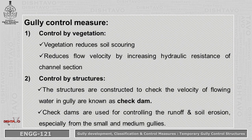Gully control measures. Control by vegetation: grasses or bushes can be grown to reduce soil scouring. It will reduce the flow velocity by increasing hydraulic resistance of the channel section.